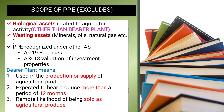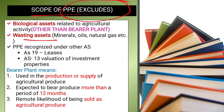Now let's discuss the scope of PPE — the applicability of AS10. We will look at the excluded items. Biological assets, other than bearer plants, are excluded. Living animals and plants are excluded. Wasting assets such as minerals, oils, and natural gas are also excluded from AS10.